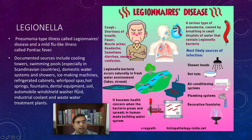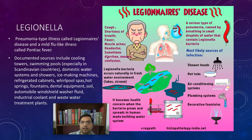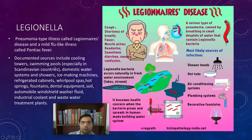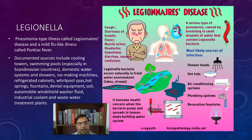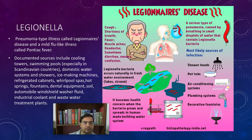Legionella infections mostly produce pneumonia-like symptoms and atypical pneumonias, as well as mild flu-like illnesses called Pontiac fever — the diagnosis is Pontiac fever when legionella infections are present. Legionella is mostly found in cooling towers, swimming pools, water tanks on rooftops, RO plants, domestic water systems, and ice machines. We generally get legionella infections from such sources.